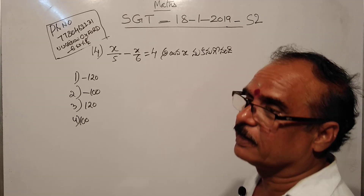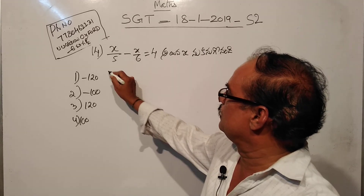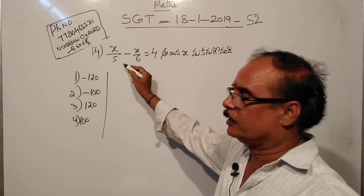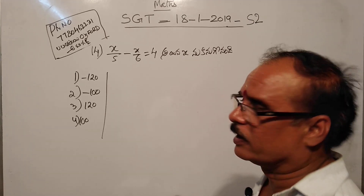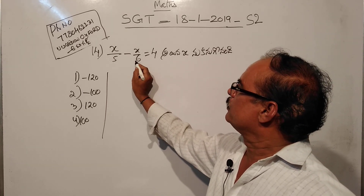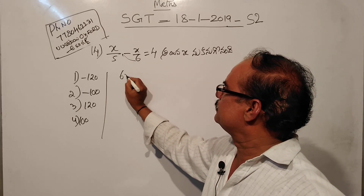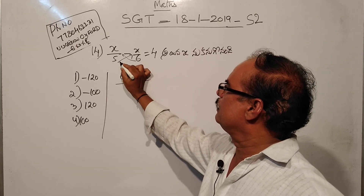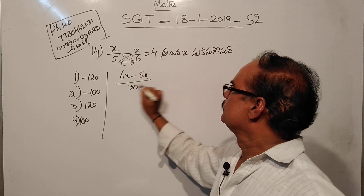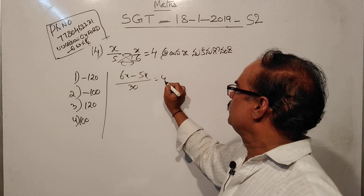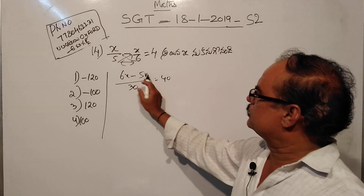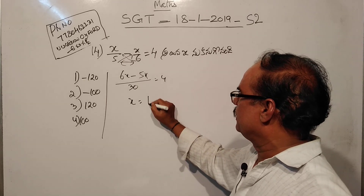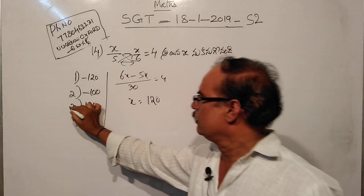Okay, it is very simple. So, it is x by 5 minus x by 6, and it is equal to 4. So, it is 6x minus 5x divided by 30, which is equal to 0. So it is equal to 6x and 5x for the x. And the x is equal to 1.